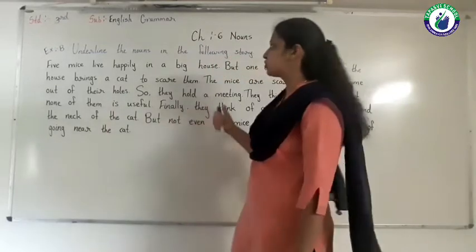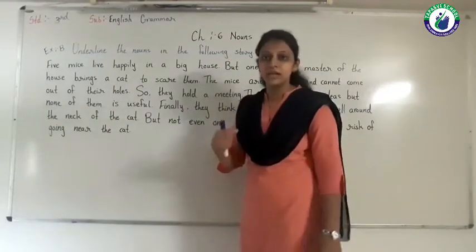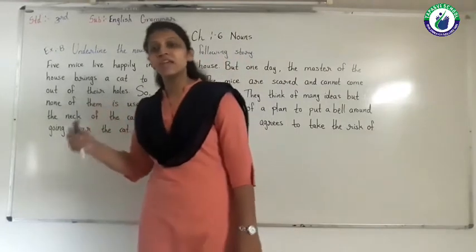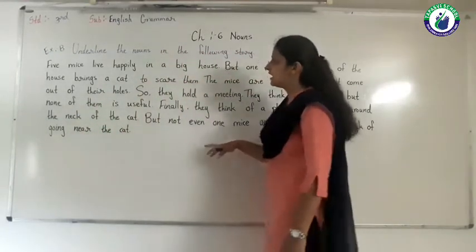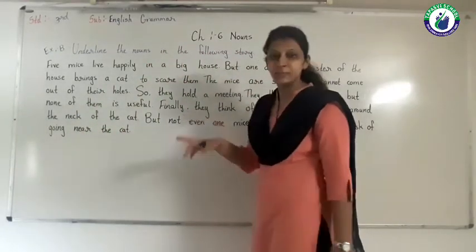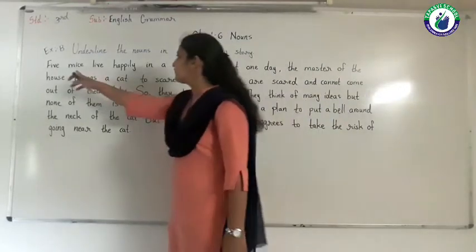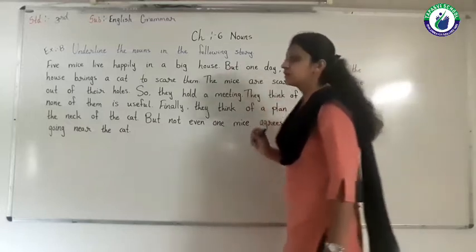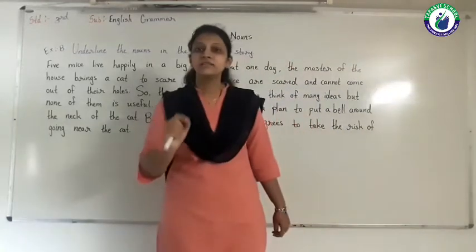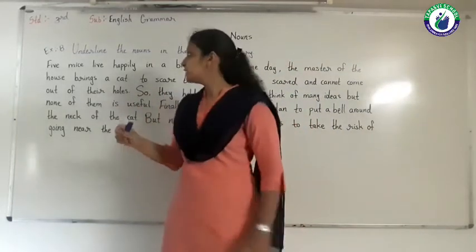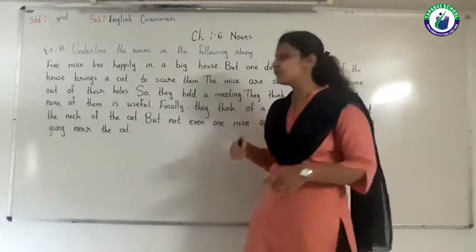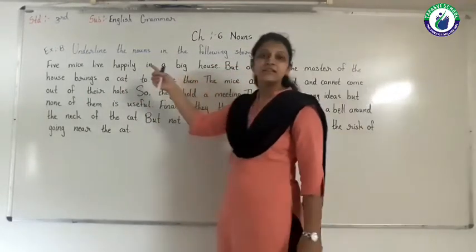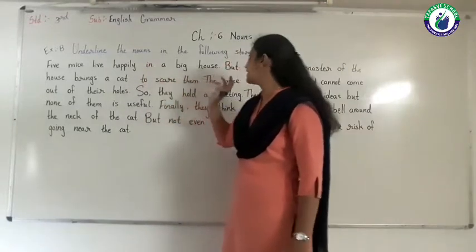Now from this story we have to find the names of persons, places, animals, birds and things. First of all I read the story and explain. Five mice live happily in a big house. Mice is a plural noun — we are talking about five mice living happily in the house.